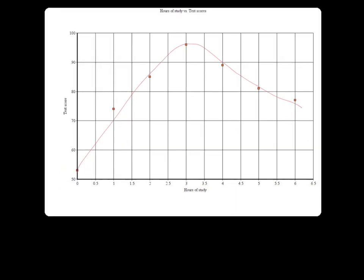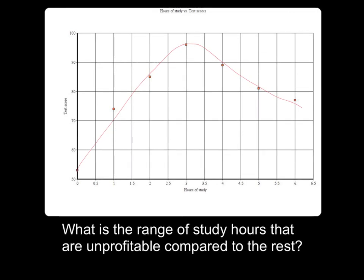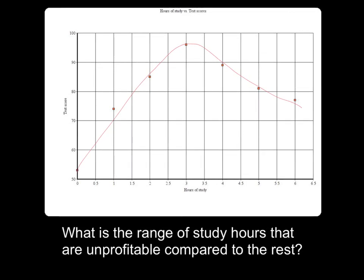How about if you were asked to find the range of study hours that are unprofitable compared to the rest? Again, are we looking for a point, or are we looking for a slope? Since we are looking for a range of study hours this time, this means that we are not just finding one point along the x-axis, but a few. This is a good indication that we need to find a slope rather than a point.